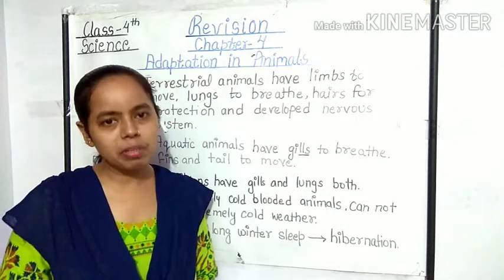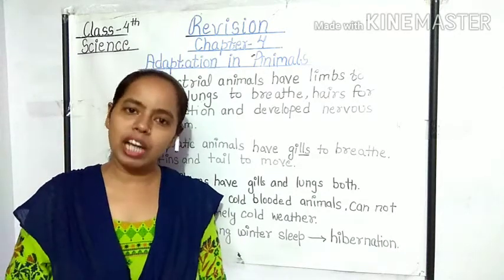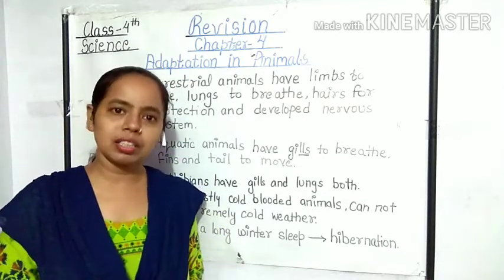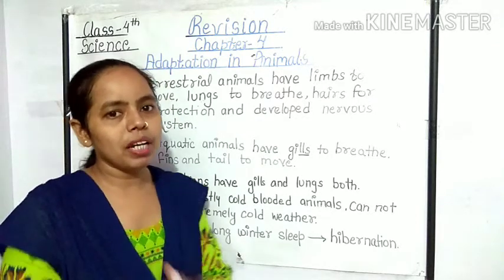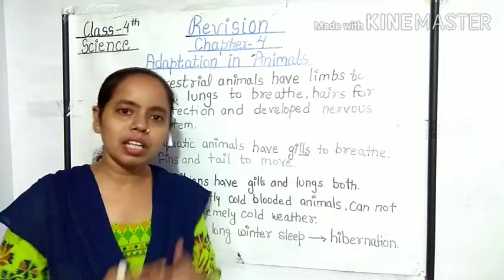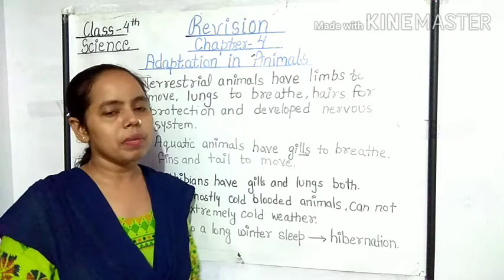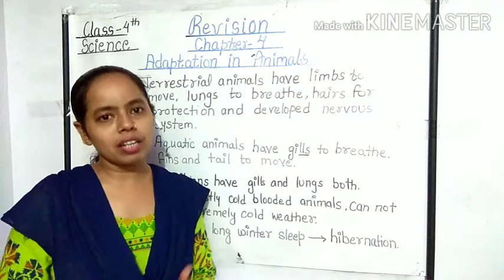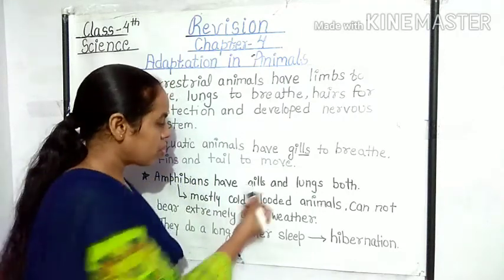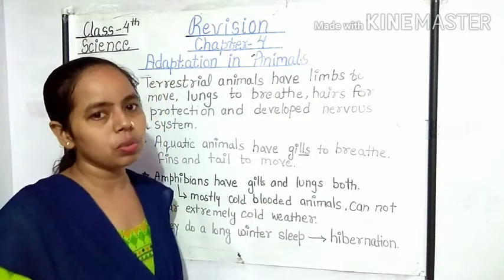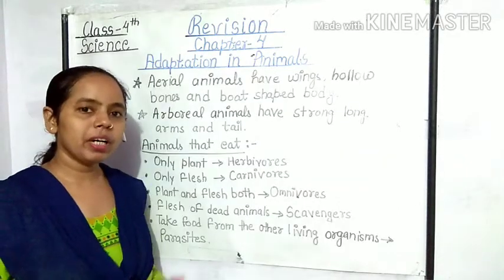Amphibians cold-blooded animals होते हैं — जब पानी में रहते हैं तो gills से सांस लेते हैं, और land पर होते हैं तो lungs से सांस लेते हैं। इसके अलावा बेटा, कुछ amphibians पानी में अपने moist skin के द्वारा भी respire करते हैं। जैसे कि frog — frog जब पानी में रहता है तो gills के साथ-साथ अपनी skin को भी use करता है respiration के लिए।